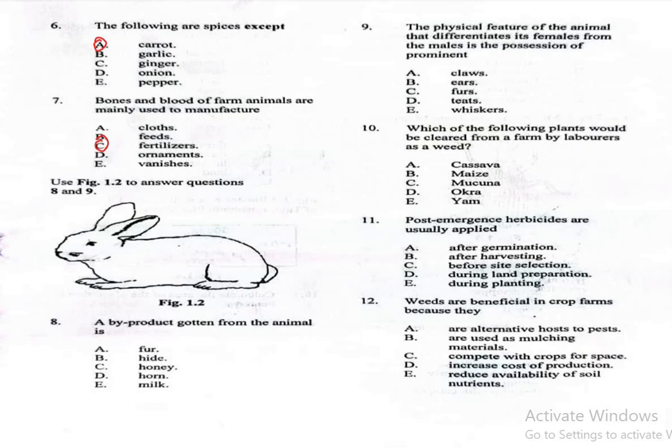Use figure 1.2 to answer questions 8 and 9. Question 8. A byproduct gotten from the animal is: A. Fur, B. Hide, C. Honey, D. Horn, E. Milk. The correct answer is option A, which is fur. The animal in the figure is a rabbit. Rabbits are commonly used, their byproducts are commonly used for fur.